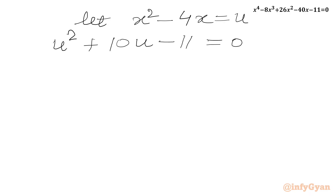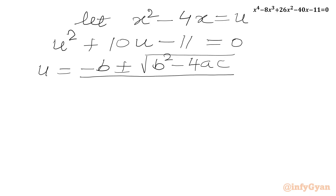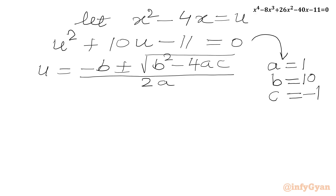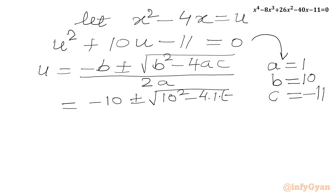So our equation becomes u² + 10u - 11 = 0. This is a quadratic equation. We can use factorization or the quadratic formula. Using the quadratic formula: u = (-b ± √(b² - 4ac)) / (2a). As per our equation, a = 1, b = 10, c = -11.